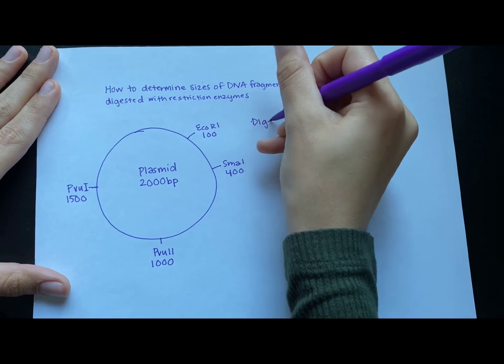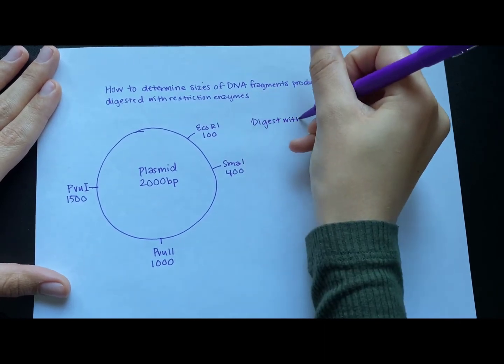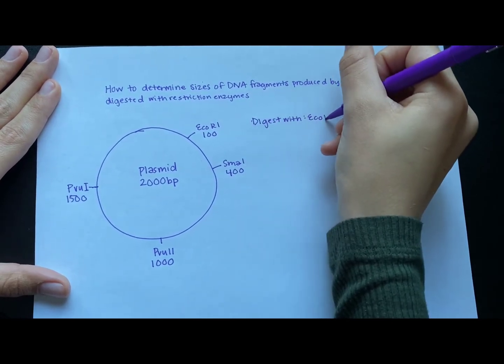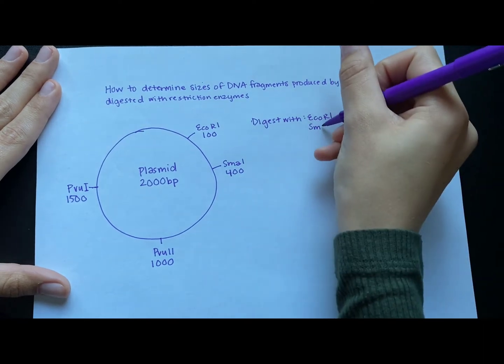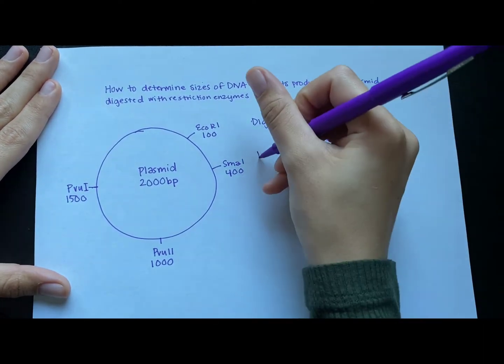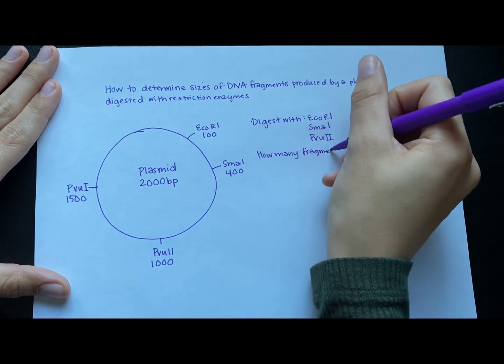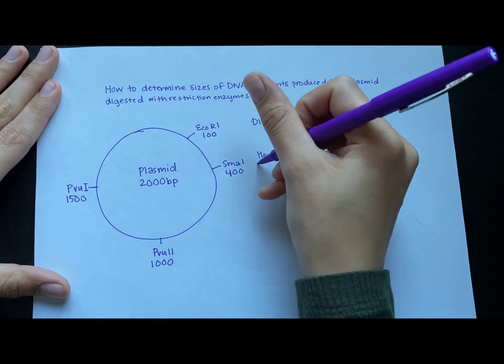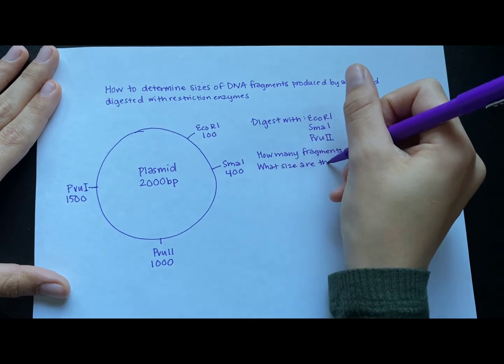A question might ask you to digest the plasmid with certain restriction enzymes. So let's simulate the digestion with ECO-R1, SMA-1, and PVU-2. And so you'll have to tell me how many fragments will result when these restriction enzymes digest the plasmid, and what size are the fragments.